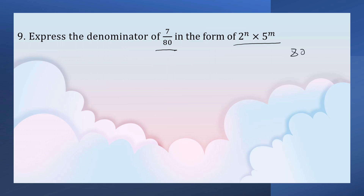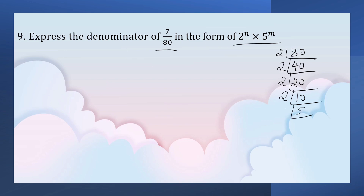Let us factorize 80. 2 40s are 80, 2 20s are 40, 2 10s are 20, 2 5s are 10, 5 1s are 5. So we have the prime factors.